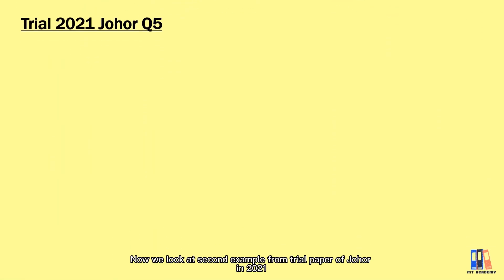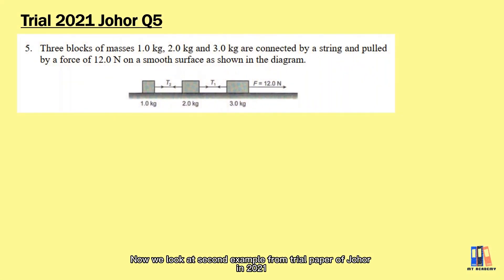Now we look at the second example from the trial paper of Johor in 2021. Here we have three blocks connected by a string. The question is kind enough that it already labeled all the tension in the string. From here, we can observe the phenomena of Newton's third law of motion.